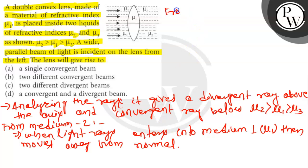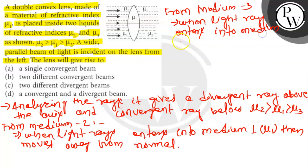From medium 3, when light ray enters into medium 1 (mu1), it moves towards the normal.